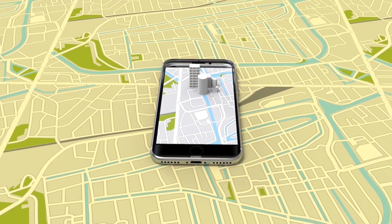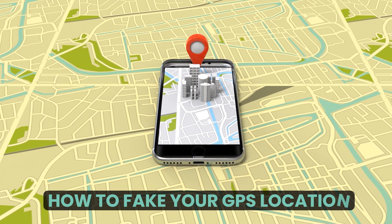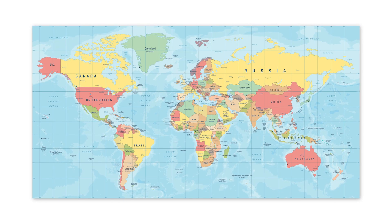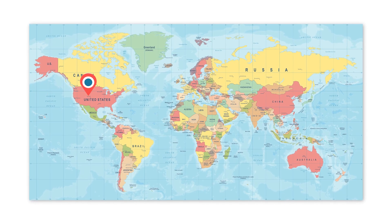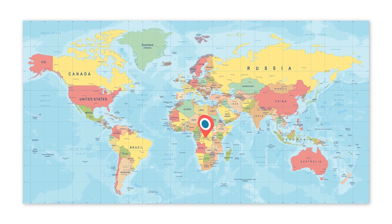In this video, we will tell you how to fake GPS location on Android and iPhone device. Sometimes, you may want to trick the apps on your iPhone or Android devices into thinking that you are somewhere else. This is called spoofing location or using a virtual location.